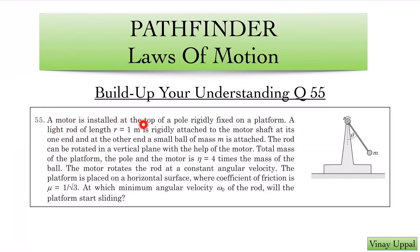A motor is installed at the top of a pole rigidly fixed on a platform. So this is the motor. A light rod of length r equal to 1 meter is rigidly attached to the motor shaft at its one end and at the other end a small ball of mass m is attached. So this is a light rod and this is my ball.